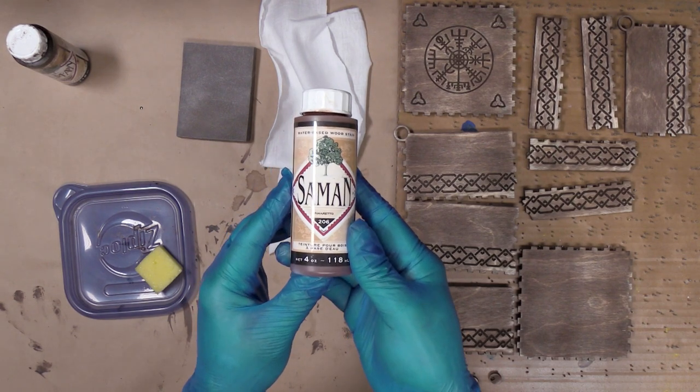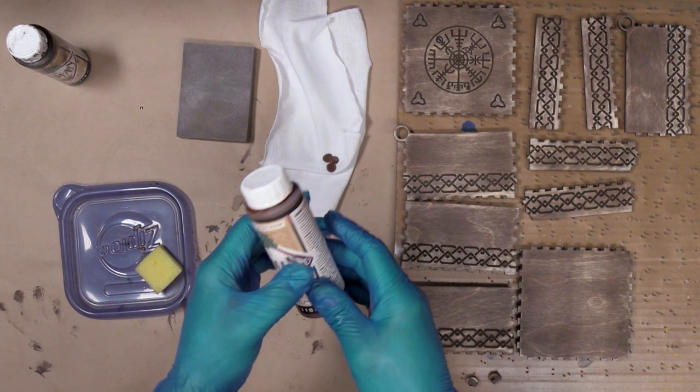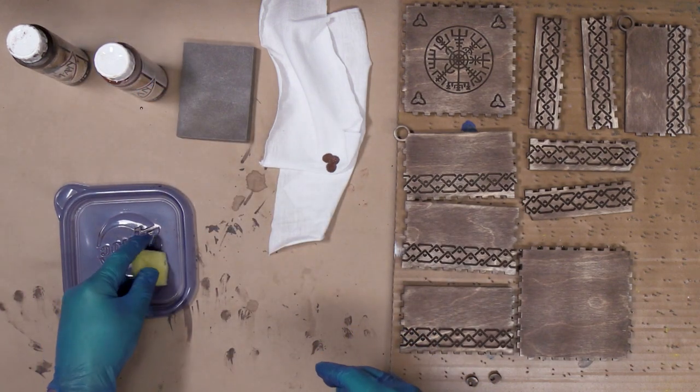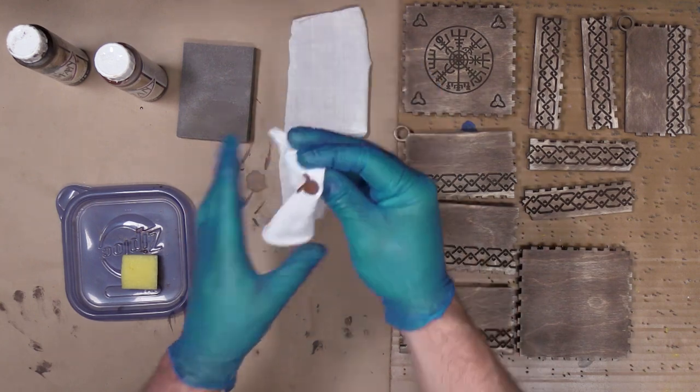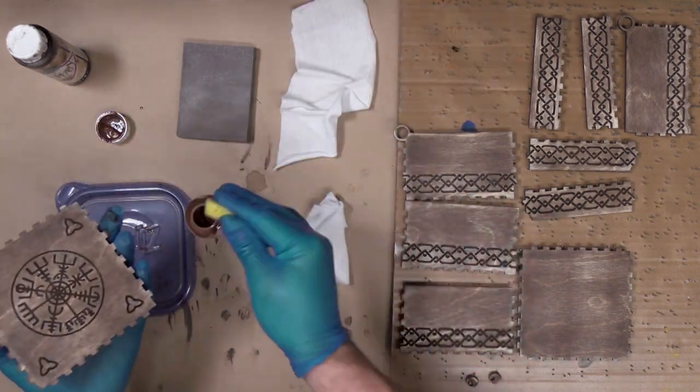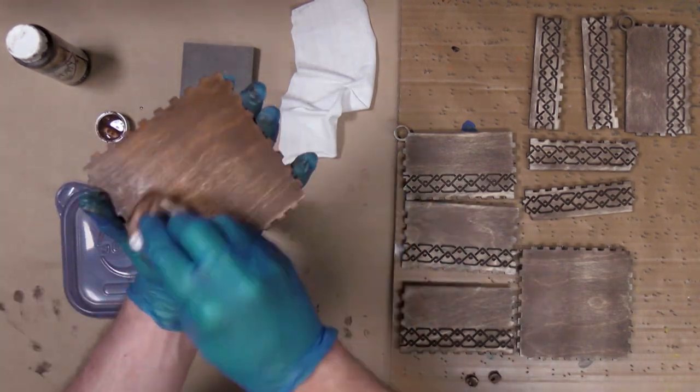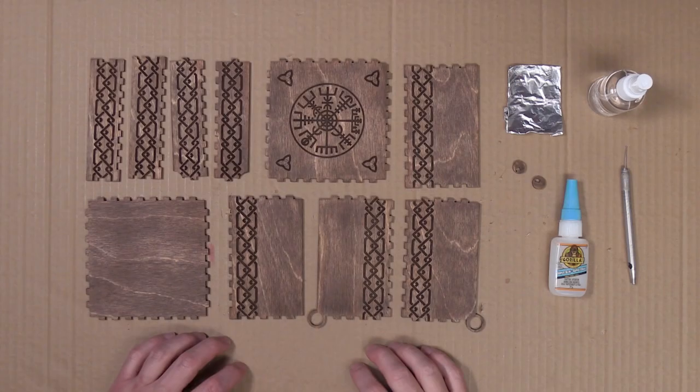So after sanding each piece the plywood's going to have a look of something like this. Now I'm going to go ahead and apply a coat of the amaretto colored stain to each one of these pieces. I'm going to apply it the same way as I did the dark walnut stain by simply wiping it on with a sponge and wiping off any excess with a piece of rag.